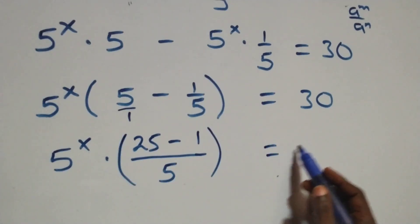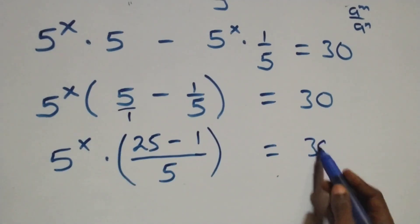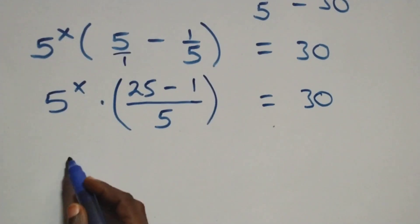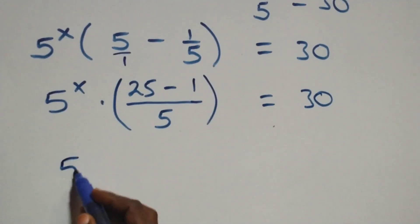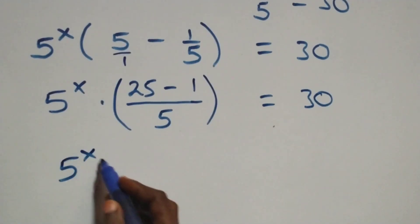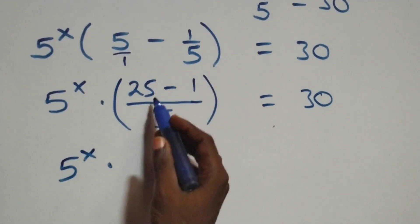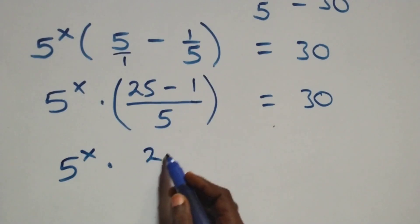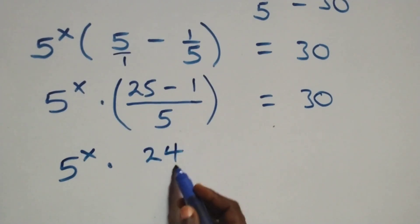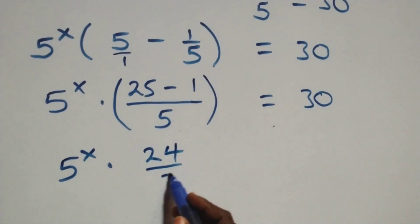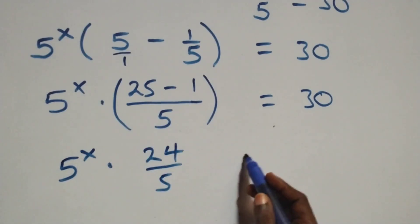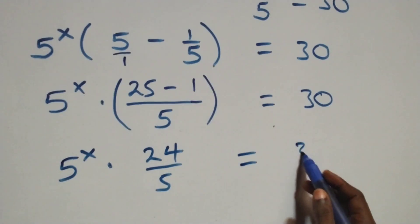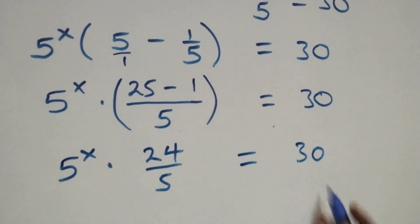This gives us 5 raised to power x times 25 minus 1, that's 24, over 5, equals 30 on this side.